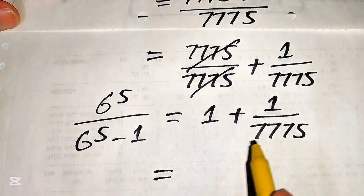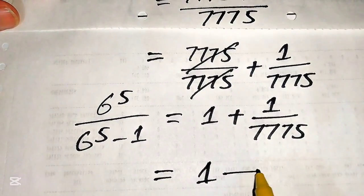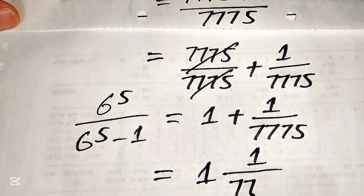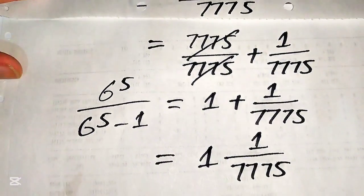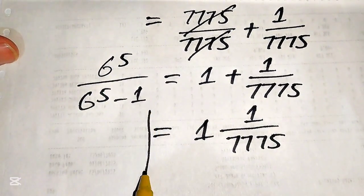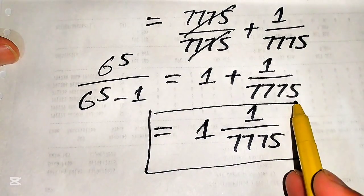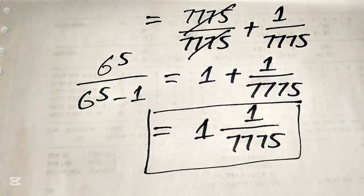We combine these terms into mixed fraction form and write it as 1 whole 1 divided by 7775. This is the final simplified form of the given question. Thank you so much for watching this video — please subscribe to my channel for more exciting videos.